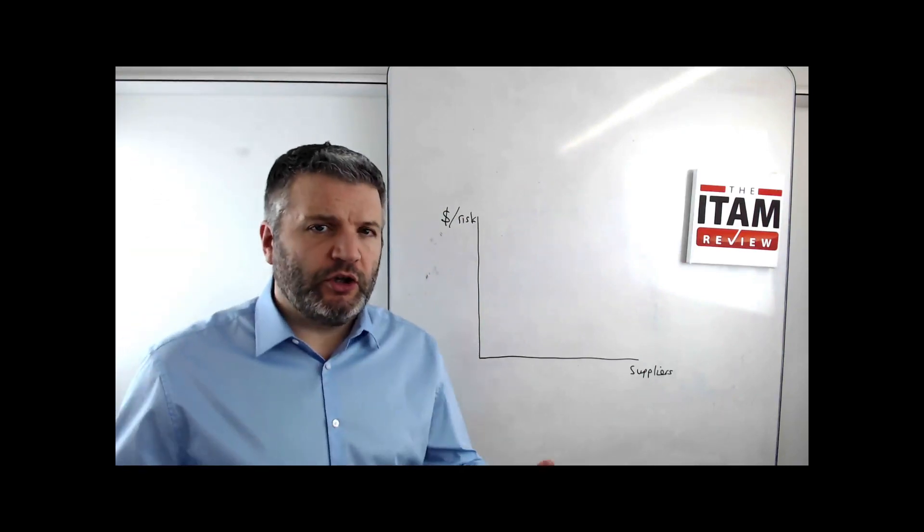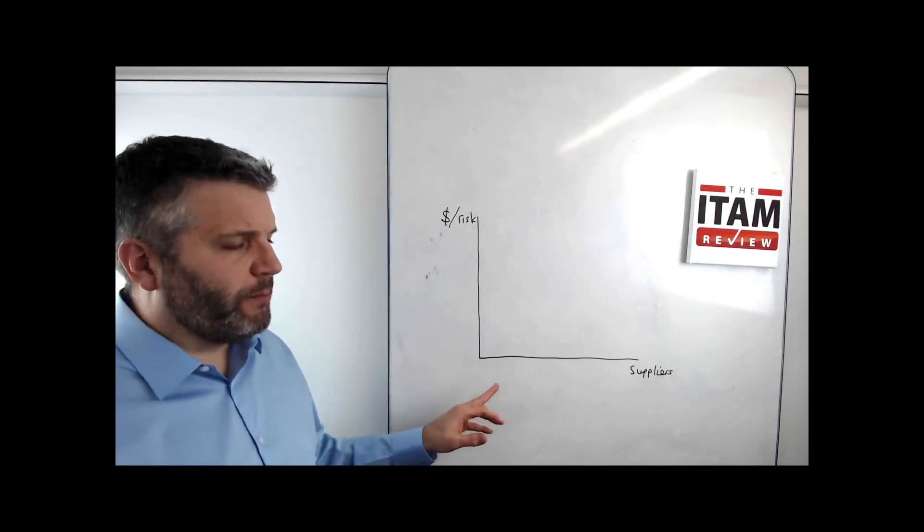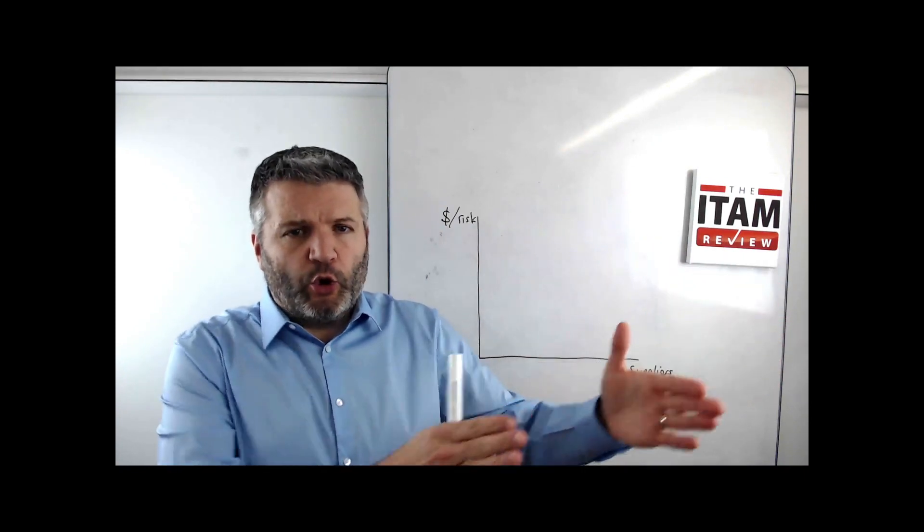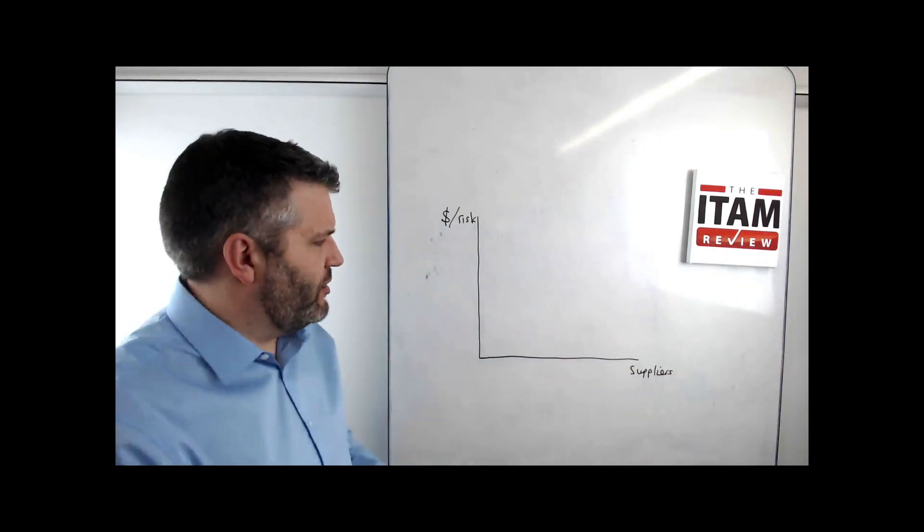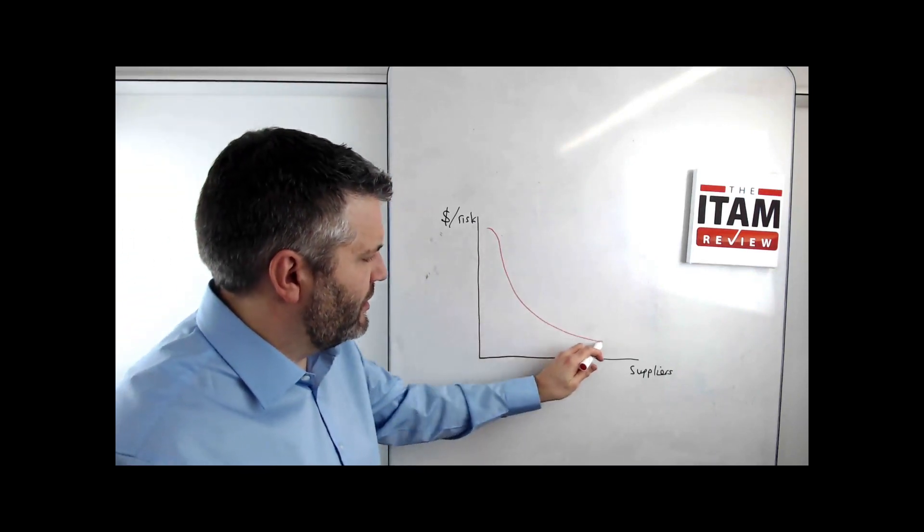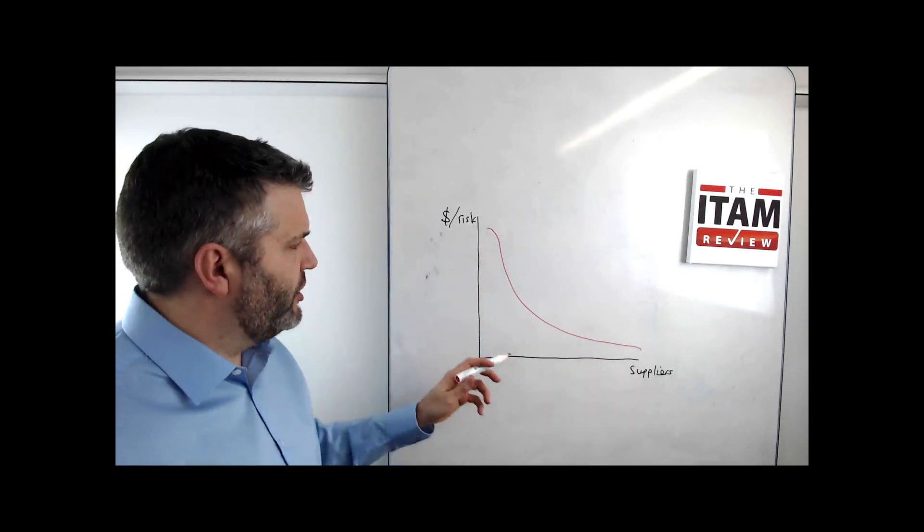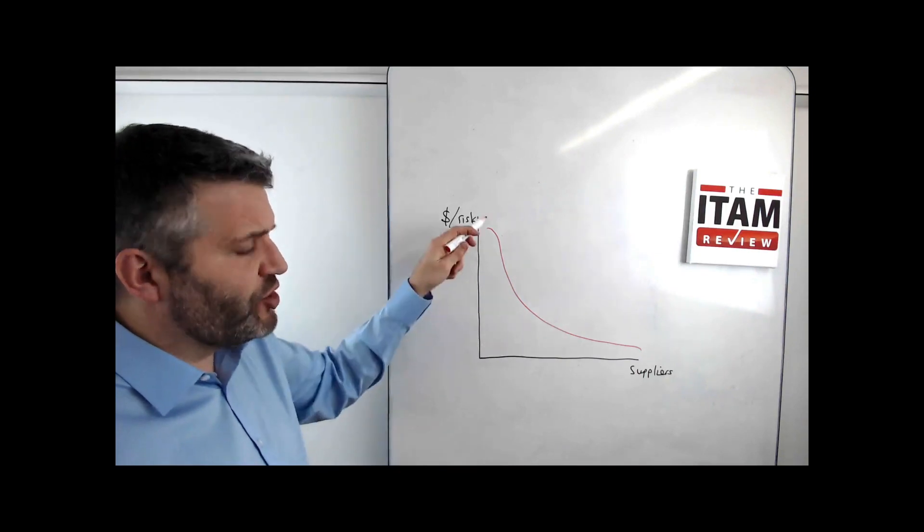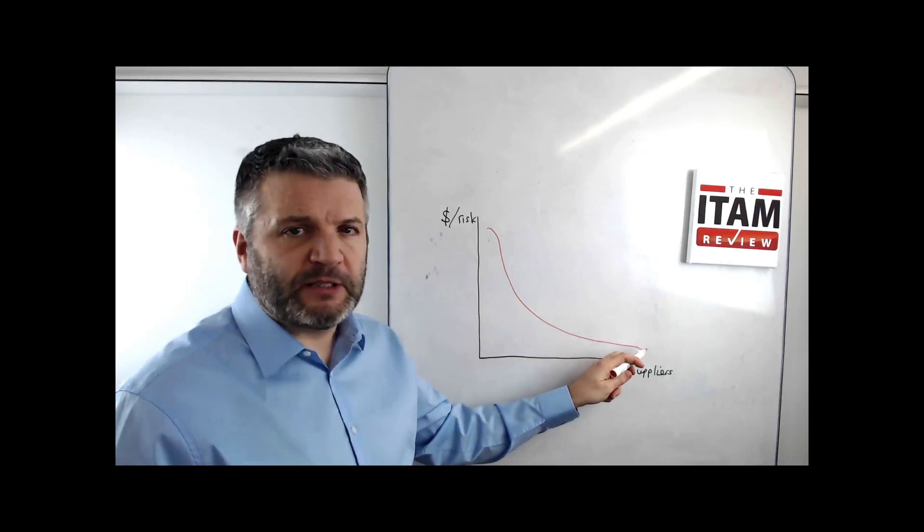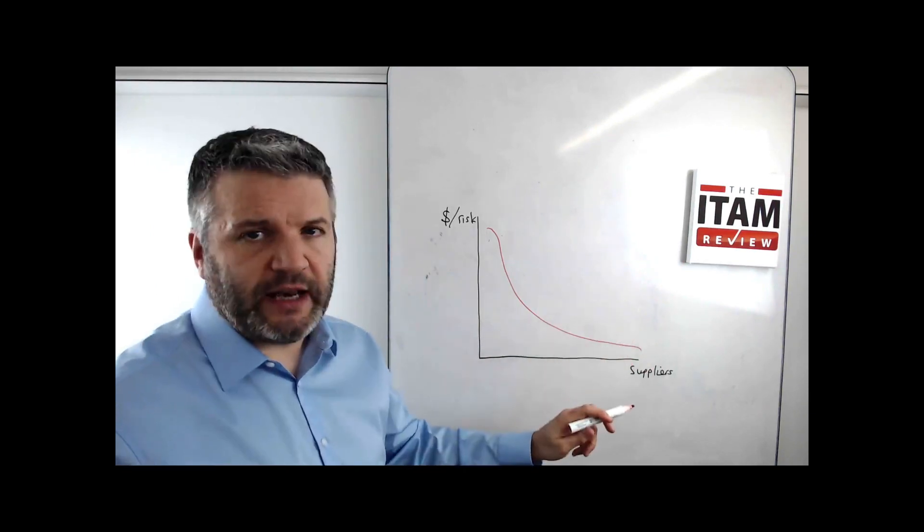Imagine that you had all of your suppliers lined up in terms of biggest spend or biggest risk all the way down to the lowest spend. For most of you, it's going to look something like this. And this could be software or hardware. You're going to have your big strategic suppliers here, software and hardware, and you're going to have a long tail of bits and pieces right down to the end.